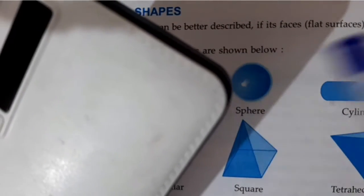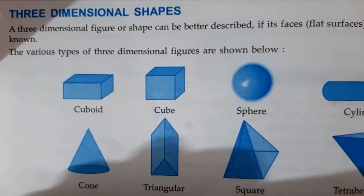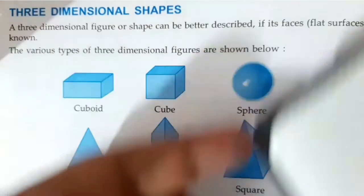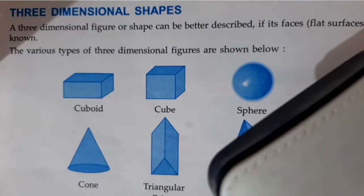And it has eight vertices. Vertices means the corners. See, you can count the number of corners. One, two, three, four, five, six, seven, eight. These are the corners.